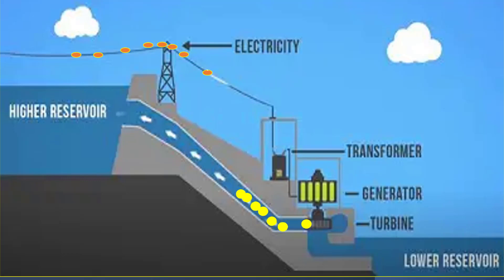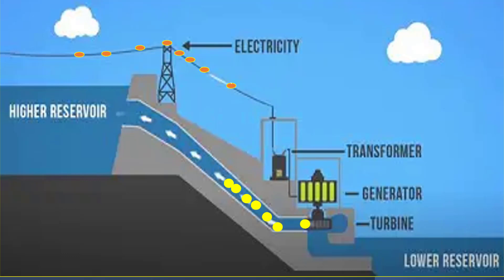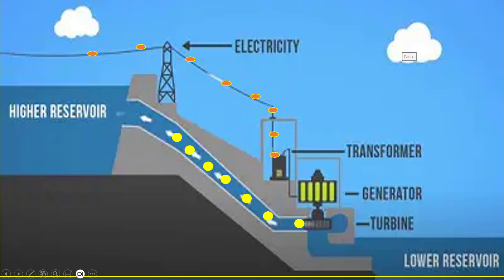From the generator, the electricity is stepped up. Normally, electricity is produced at 11 kV, then it is stepped up — maybe to 220 kV or more — using a step-up transformer. Then it is transferred through transmission lines.